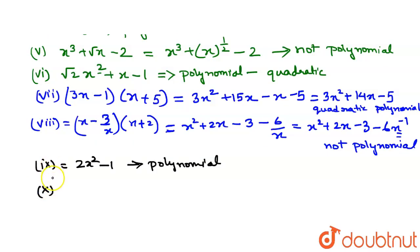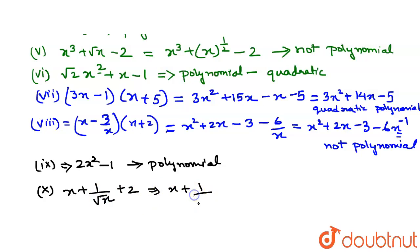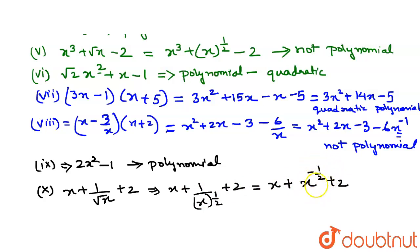The tenth question is x plus 1 by root x plus 2. We can write 1 by root x as x to the power of minus 1/2. Simplifying, the expression becomes x plus x to the power of minus 1/2 plus 2. Since the power of this variable is both negative and fractional, this is not a polynomial.